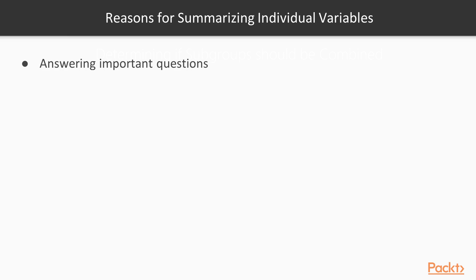The answer to that question is going to be important because it would be important to know if 90% of our customers are satisfied with that product, or maybe only 50% of our customers are satisfied — in which case, as a company, we would be in bad shape. So that's the first reason: summarizing individual variables can answer really important questions.